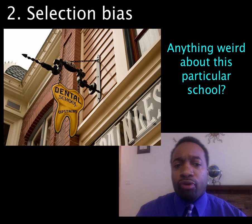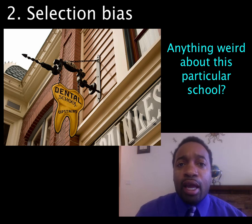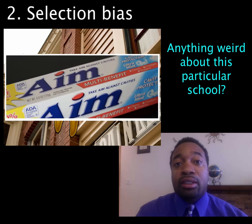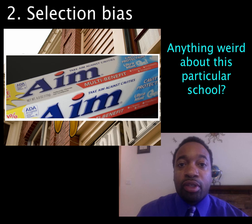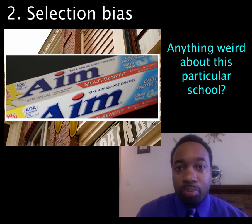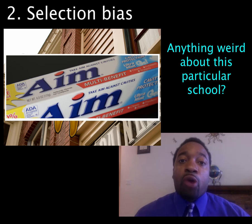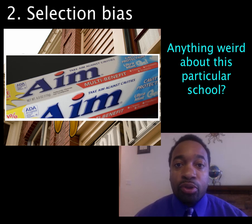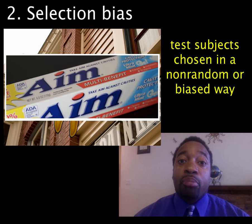You do a little more research and find out that in that school, they only used AIM in their classes. Now it occurs to you that selecting test subjects from the same school was not a good idea, because the school might not be representative of the entire dental community or population. This brings us to our second important error in experimental design: selection bias.